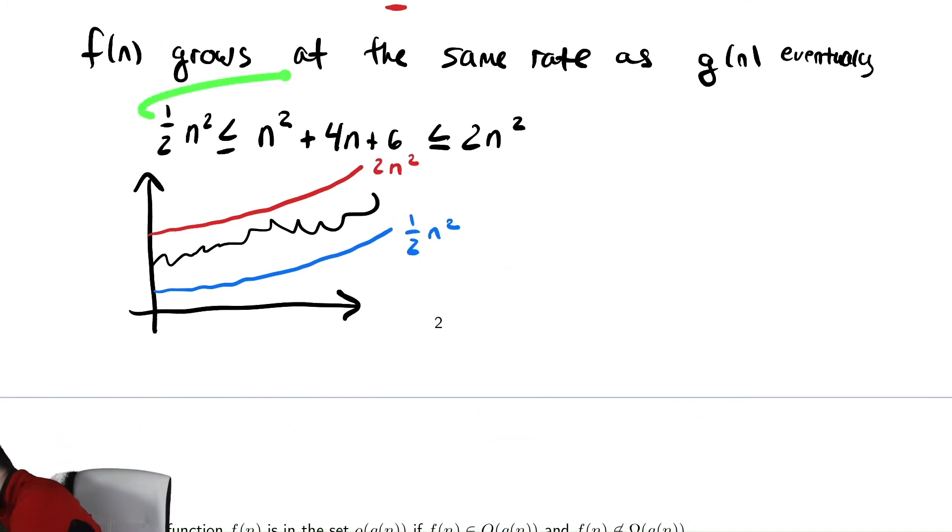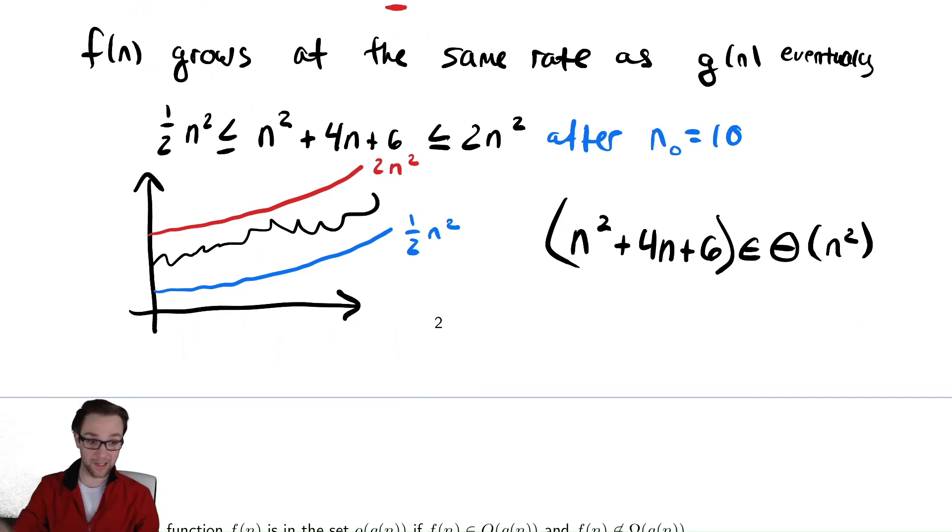So, we would say, with these two inequalities, and the idea that this happens after n = 10, we're going to call that n₀, as the initial n value for which this is true. The subscript naught meaning initial. In that case, what we say is that the function we are interested in, n² + 4n + 6, is in theta of n². As in, that function looks like, or grows at the same rate as, n². We will see many, many examples of doing this to gain more familiarity and comfort with the notation as you go through several examples.